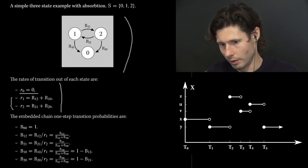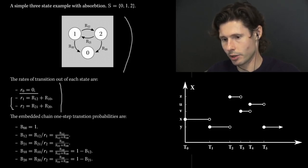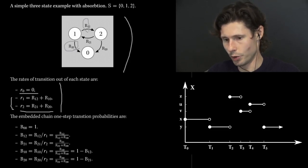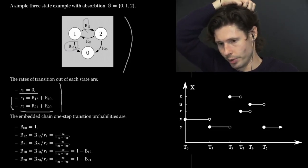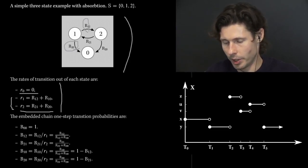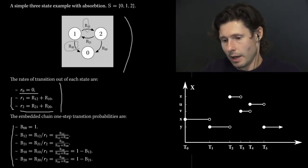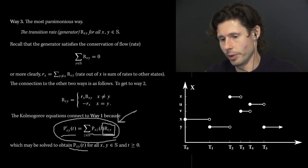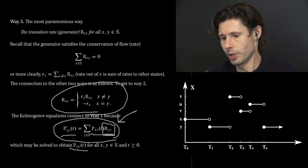For the other two states, you do see arrows in the transition rate diagram. For R1, you sum up the value of the arrow going to state 0 and the arrow going to state 2 — that sum equals the rate out of state 1. For state 2, you sum up R21 (transition from 2 to 1) and R20 (transition from 2 to 0). Then the embedded chain one-step transition probabilities follow directly by dividing: Rxy divided by Rx, using the connecting formula between the generator and the embedded chain.